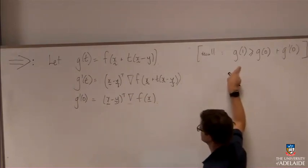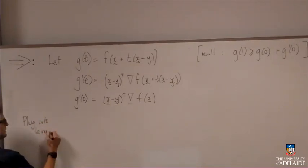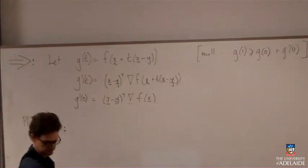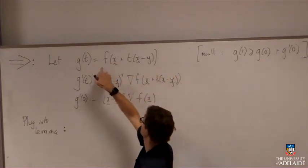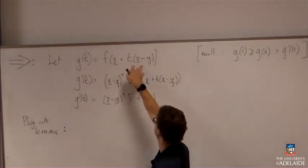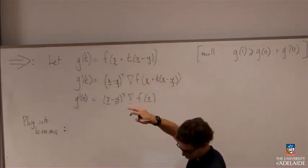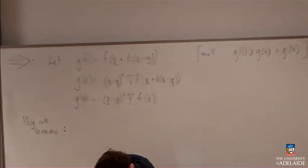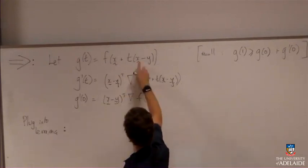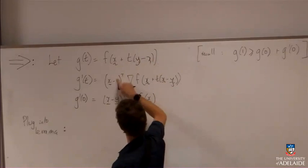So if I plug into the lemma, then I'll learn how to spell lemma as well. Then I get g of one. So g of one is going to be plugging in t equals one into this. So that'll give me x plus x minus x plus x minus y. I've copied something down wrong. That's a y minus x.